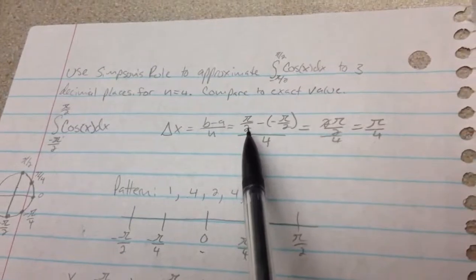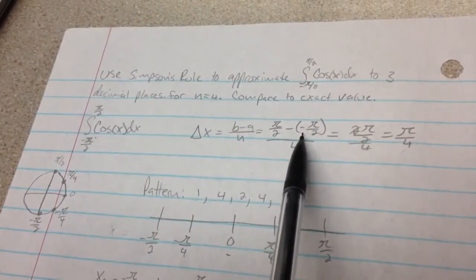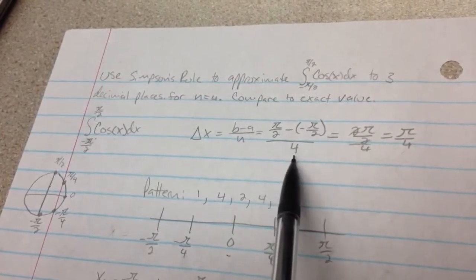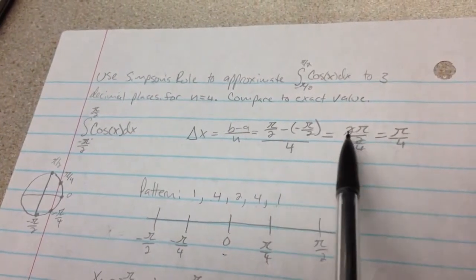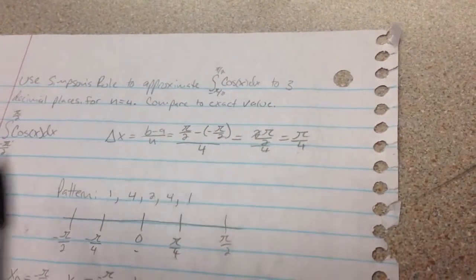So over here, our b is equal to pi over 2 minus a, which is equal to negative pi over 2, over n, which is equal to 4. So when you do your algebra math, your twos are going to cancel out, and you're going to be left with pi over 4.